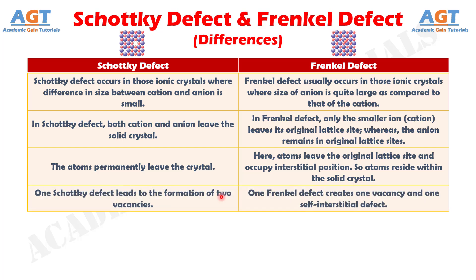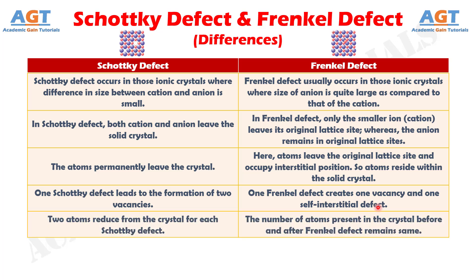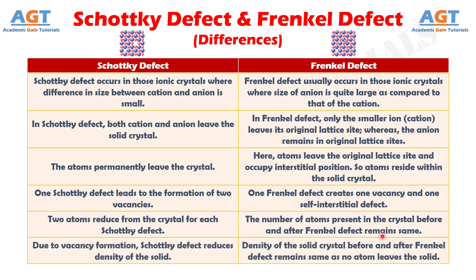Number 4: One Schottky defect leads to the formation of two vacancies, whereas one Frenkel defect creates one vacancy and one self-interstitial defect. Number 5: Two atoms reduce from the crystal for each Schottky defect, whereas the number of atoms present in the crystal before and after Frenkel defect remains the same.